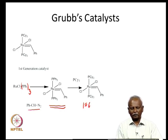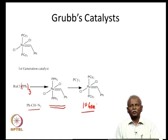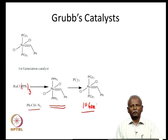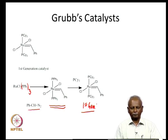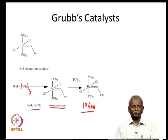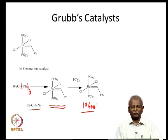The first-generation Grubbs catalyst turns out to be a good metathesis catalyst. Its advantages are: it can be readily synthesized in the laboratory; it is a stable system that can be stored and used repeatedly without difficulty — you do not have to make it fresh every time. This is the primary advantage, and it is a single-component catalyst, which is the major advantage of the Grubbs catalyst.